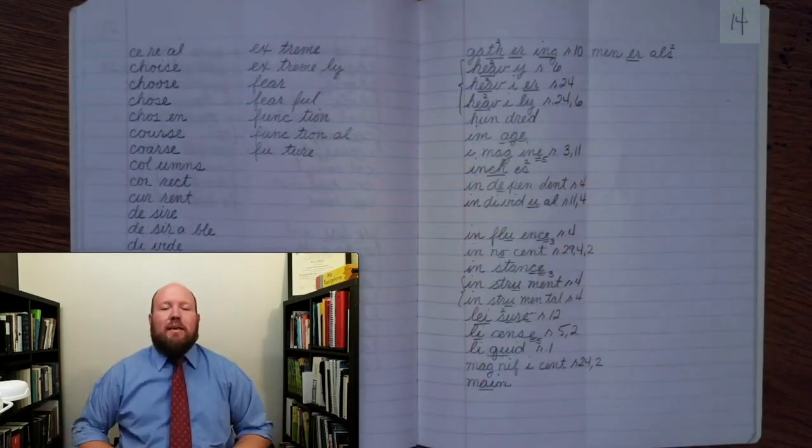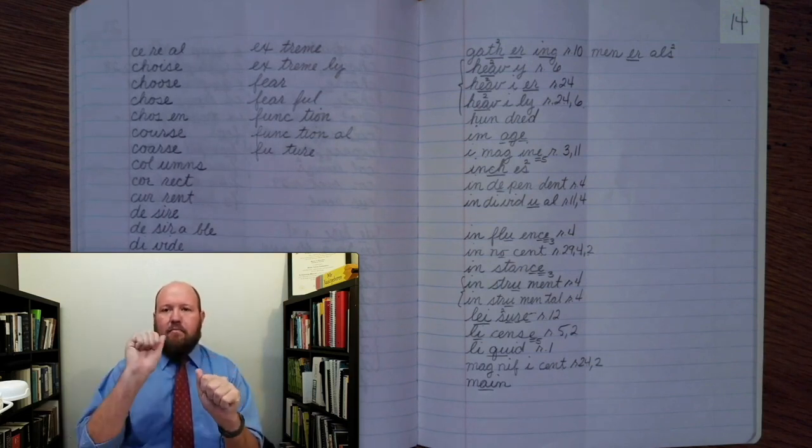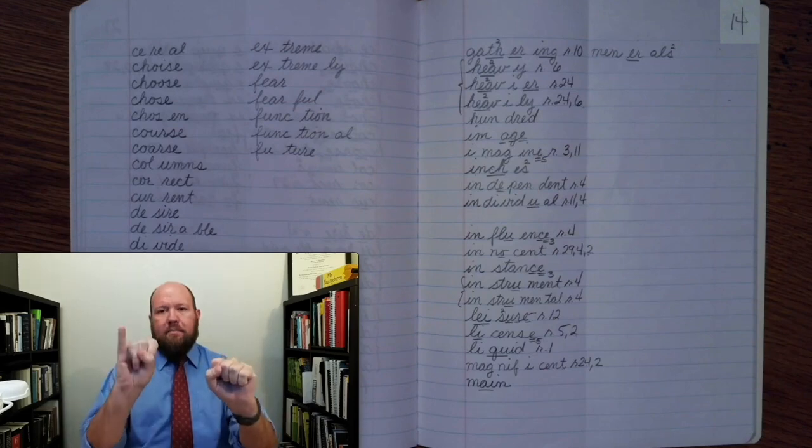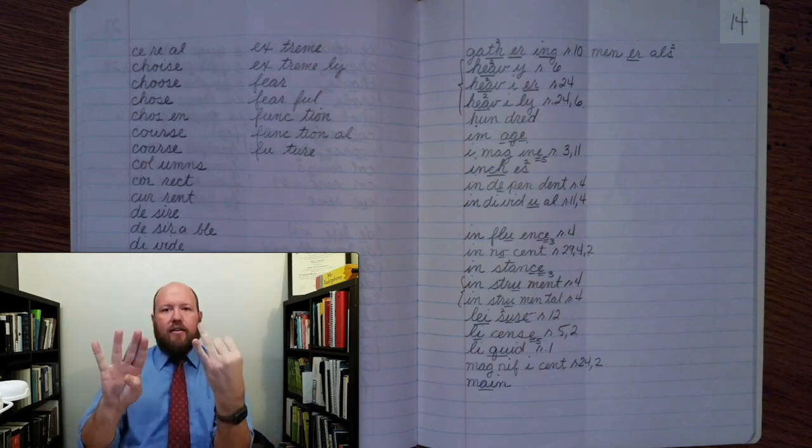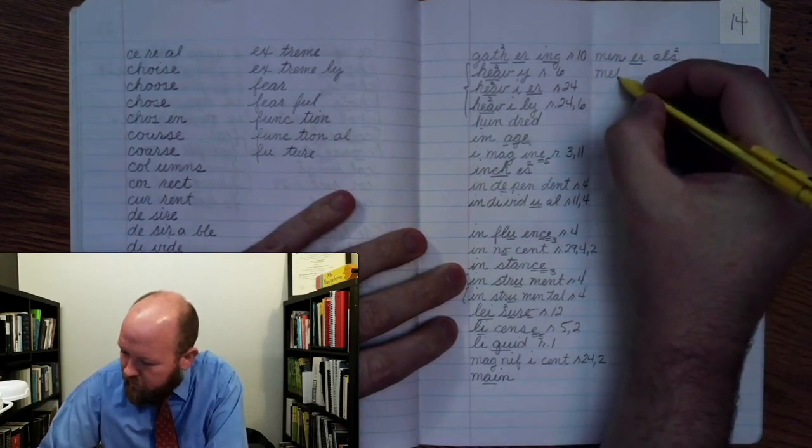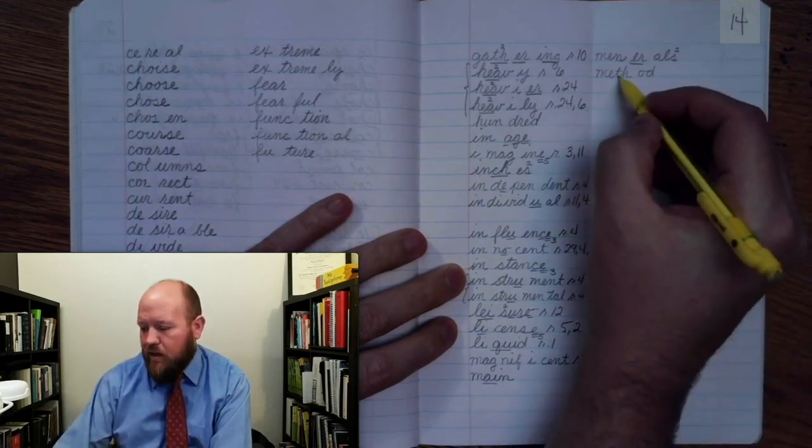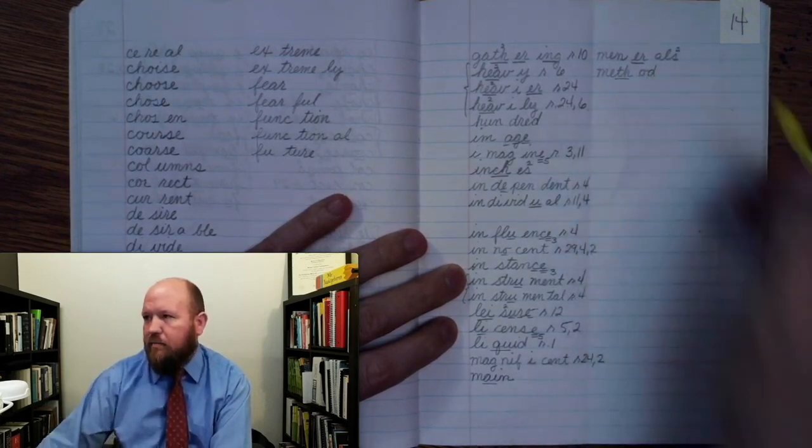The next word is method. Like how you do something is your method. Method. Meth, odd. M, e, th, aw, da. Method. Meth, odd. Method. Markings. M, e, th, once, aw, da. Method.